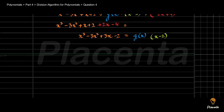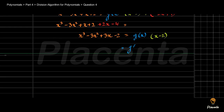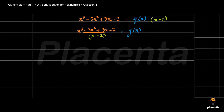So g(x) equals x cube minus 3x square plus 3x minus 2, divided by (x minus 2). We can find g(x) by dividing this polynomial by (x minus 2). For the division, we first draw a line and then set up the long division.